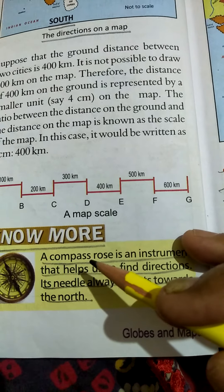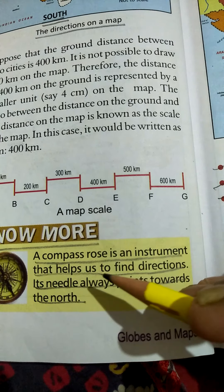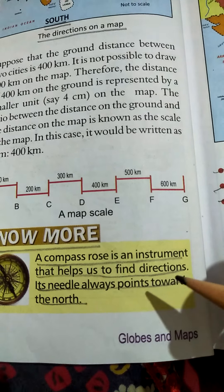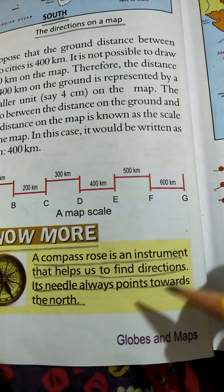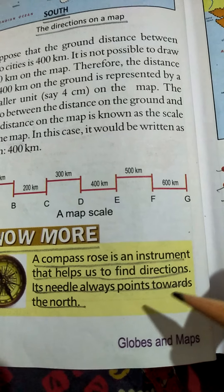A compass rose is an instrument that helps us to find direction, and its needle always points towards the north.